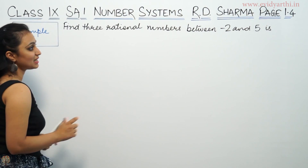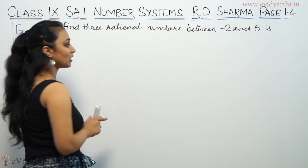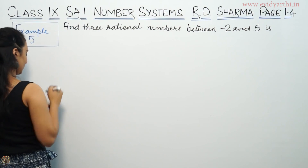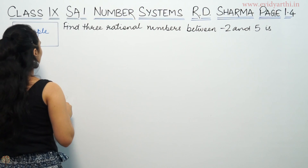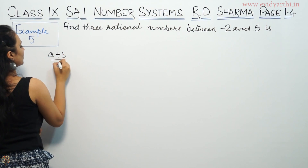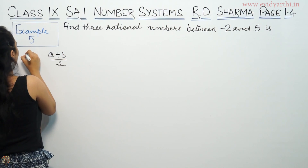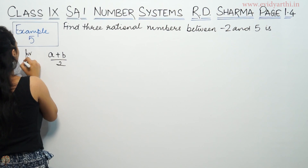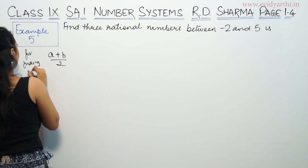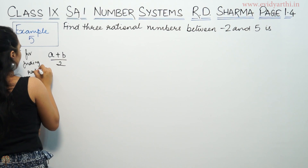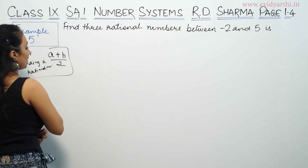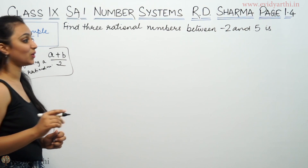So when you want to find rational numbers between two numbers, the formula to use is A plus B divided by 2. This gives a rational number between the two given numbers.